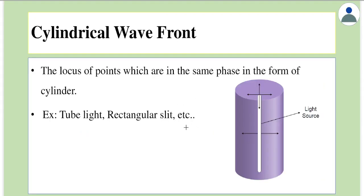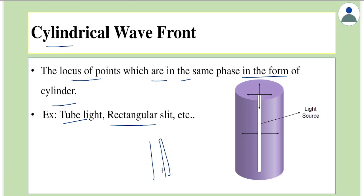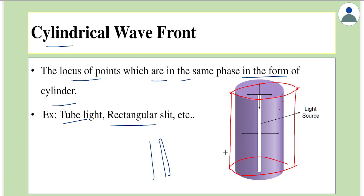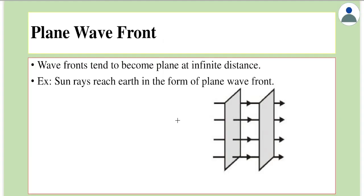The next kind is called a cylindrical wavefront. These are the locus of points in the same phase in the form of a cylinder. If the source is not a point source but an extended source like a tube light or a rectangular slit, what you get is a cylindrical wavefront. Every point on the cylinder is in the same phase, and the wavefronts form coaxial cylinders.